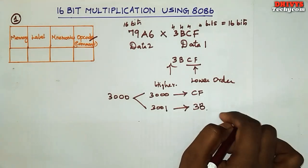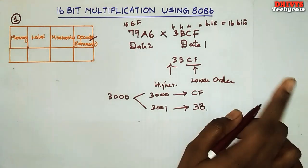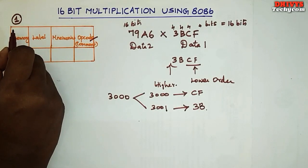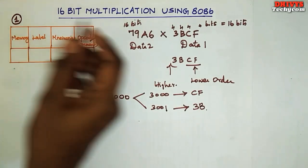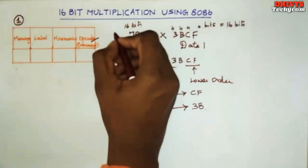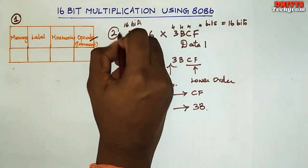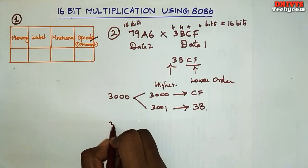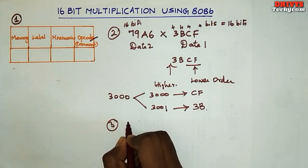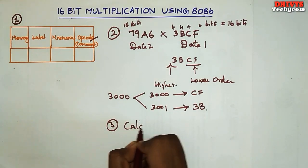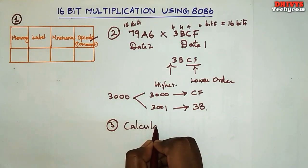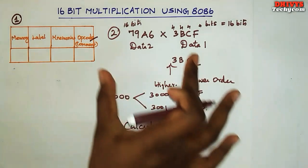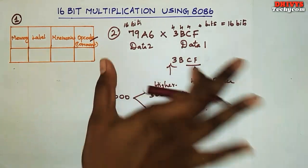This is step number 1. Step number 1 is to fix the table columns. Step number 2 is to set the data. Step number 3 is how to do the calculation, because we need to match the manual calculation in the machine.